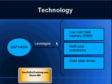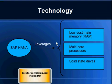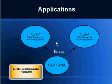SAP HANA leverages RAM, multicore processors, and solid state drives. Solid state drives have become very popular — they don't have a spinning mechanism, so data is accessible almost immediately. They are more expensive than traditional drives. SAP HANA, as an in-memory database, can be used for any kind of application, be it OLTP (Online Transaction Processing) or OLAP (Online Analytical Processing).